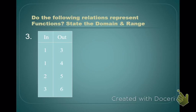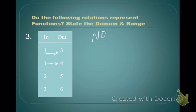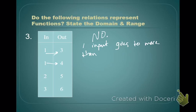Check out number 3. Is this going to be a function? Come up with an answer and a reason why or why not, and then write out your domain and range. When I put a 1 in, I could get a 3 or a 4 — so I don't know exactly what I get coming out. This is not a function. Why? Because 1 input goes to more than 1 output.